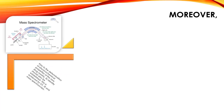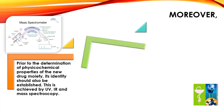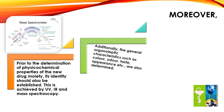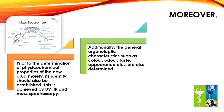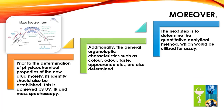Moreover, prior to the determination of physical-chemical properties of the new drug moiety, its identity should also be established. This is achieved by UV, IR, and mass spectroscopy. Additionally, the general organoleptic characteristics such as color, odor, taste, and appearance are also determined. The next step is to determine the quantitative analytical method.